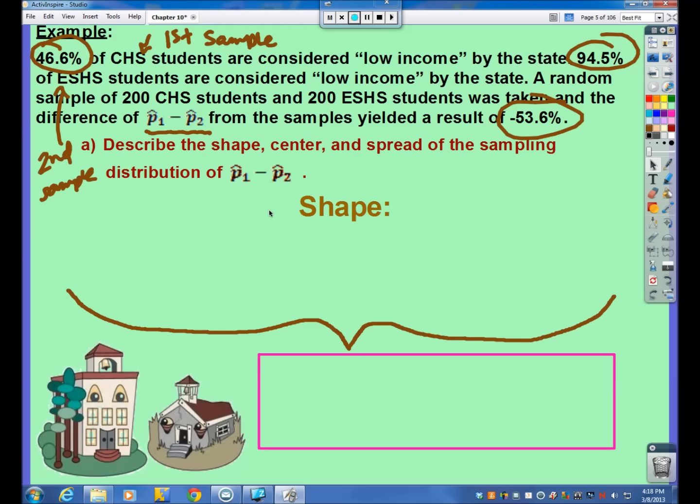So, number one, we're going to talk about shape, center, and spread of our sampling distribution of our P1 hat minus P2 hat. If we were to take many, many, many random samples of size 200 from each school and from each calculate a P hat and subtract those numbers and do that over and over and over again. And if we were to stack all of these differences of our sample proportions, we're going to hope for an approximately normal distribution. But first, we have to check, oh my gosh, all four of these. So, we need to check as N1 times P1 greater than or equal to 10, et cetera. So, it's going to take you a little while to write all these down real quick.